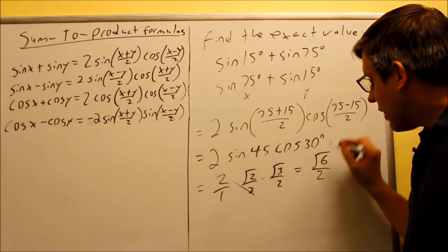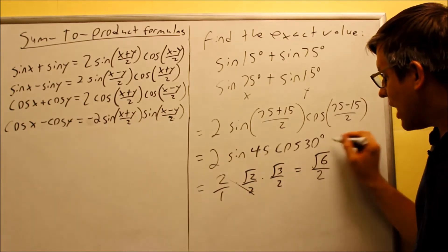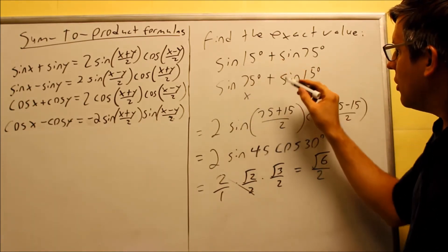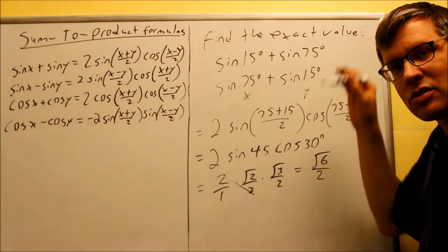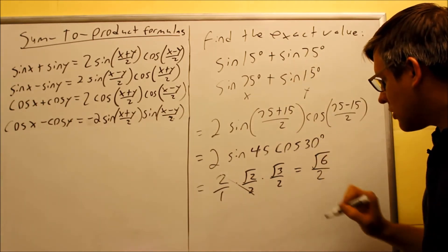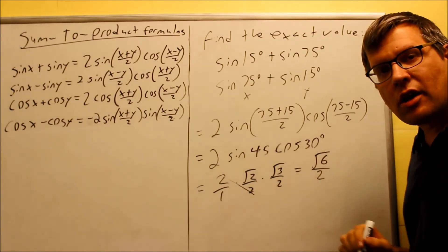We're not allowed to reduce that at all. That would be your final answer. That's the exact value. If I took sine 15 plus sine 75 in my calculator, I should get the same decimal equivalent as square root of 6 over 2 as long as my calculator is in degrees.